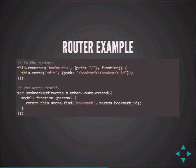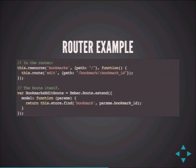The router itself looks like this. You can see the routing I showed before, and then the route class itself has a bunch of methods. One of them is model(). Ember calls that when it's determined we're going to load this route — it calls model() on the route saying, 'Load whatever data you need.' In this case, I go into the data store and find the bookmark that matches the bookmark ID parameter from the URL.